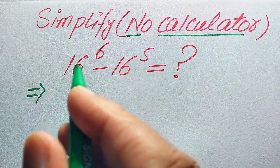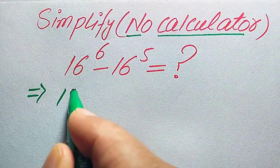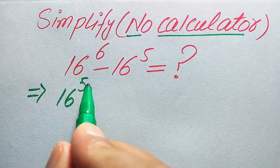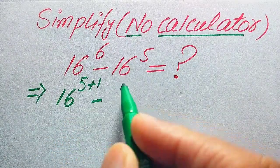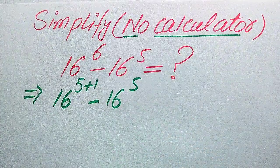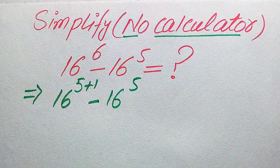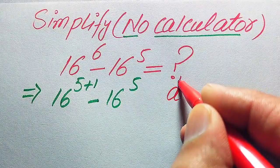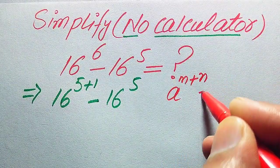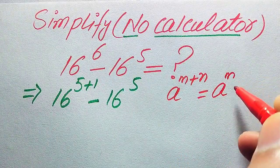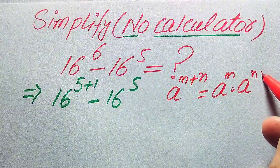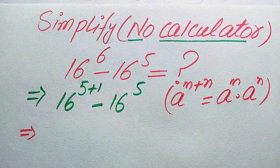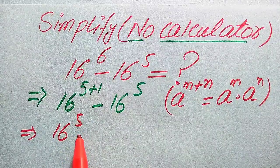First, we focus on the exponent of the first term. We write 16 to the power of 6 as 16 to the power of 5 plus 1, minus 16 to the power of 5. We use the exponential law: a to the power of m plus n equals a to the power of m multiplied by a to the power of n.